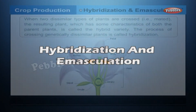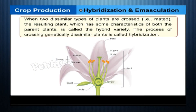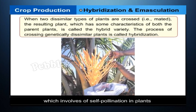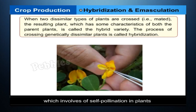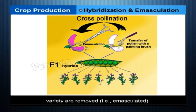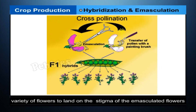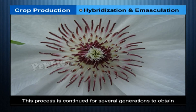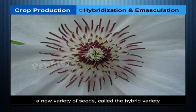Hybridization and Emasculation: when two dissimilar types of plants are crossed, i.e. mated, the resulting plant which has some characteristics of both parent plants is called the hybrid variety. The process of crossing genetically dissimilar plants is called hybridization. Emasculation is a hybridization technique involving self-pollination in plants, where the anthers from flowers of one desirable variety are removed (emasculated) to allow pollens from the second variety to land on the stigma. This process is continued for several generations to obtain a hybrid variety possessing the desirable characteristics of both parent plants.